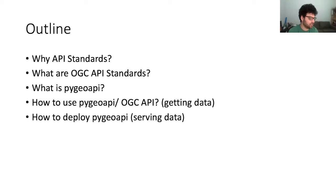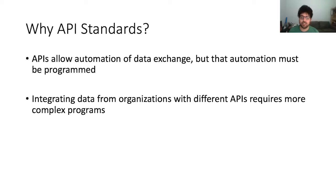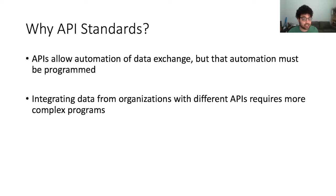And then an overview of how to deploy it, how to configure it — although at the end I'll provide links to the actual detailed documentation; this isn't really going to be a tutorial workshop. For those who might not be on board already, APIs are great things. They allow us to automate data exchange. They set the rules for machines to talk to each other, but you still have to write a program that does that data exchange. There are lots of different APIs out there and integrating different data from different organizations requires more and more complex programs, the more diversity there is.